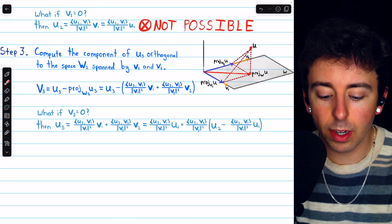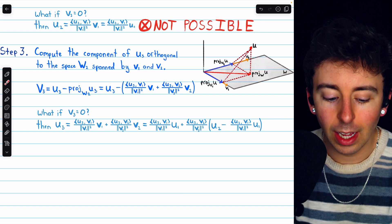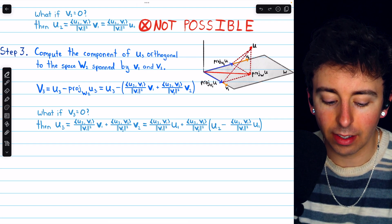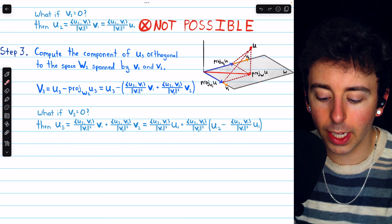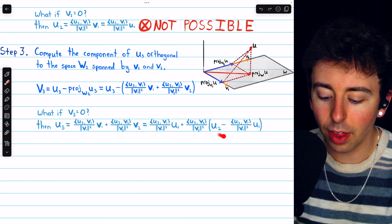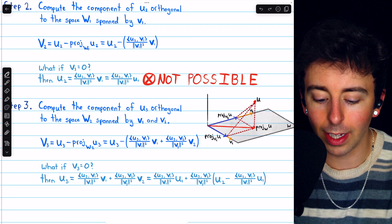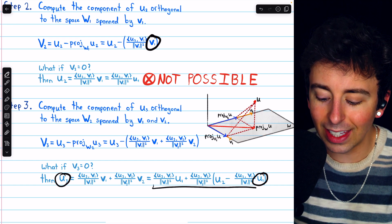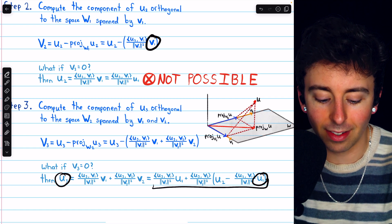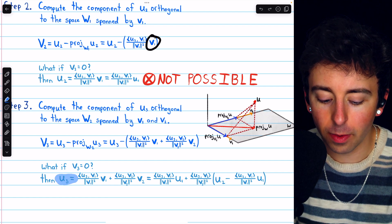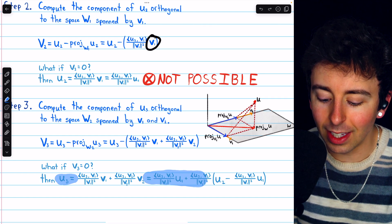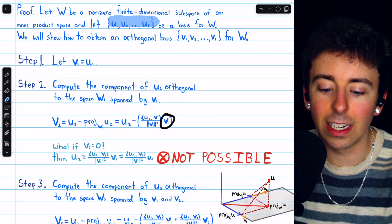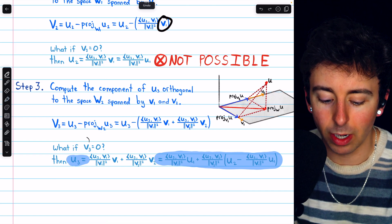We should ask: what if v3 is equal to zero? If v3 were zero, then we could rearrange to get u3 equals that projection. We could replace v1 with u1 and replace v2 with its construction in terms of u1. Thus we'd be writing u3 entirely as a linear combination of u1 and u2. But u1, u2, and u3 are all basis vectors, so they have to be linearly independent — something like this cannot be possible. Hence v3 is not equal to zero.